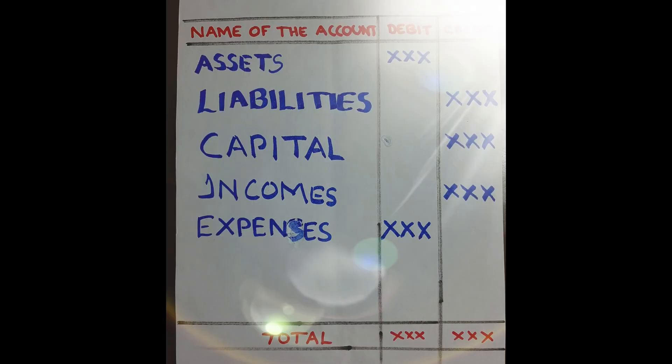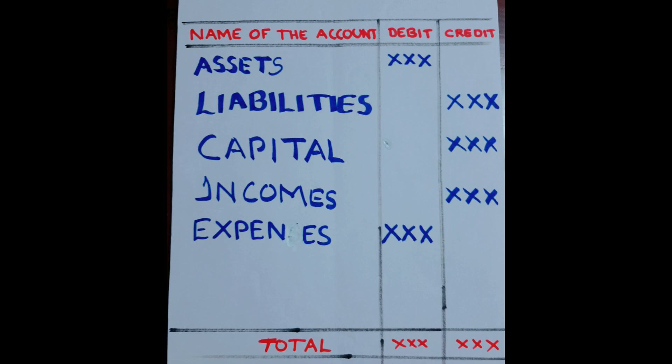Capital should also be shown in the credit column. Income items like commission received or interest received should be shown in the credit column of the trial balance. Expense items like wages, salaries, and rent paid should be shown in the debit column. Finally, we total both columns — the total of debit and credit columns must tally.